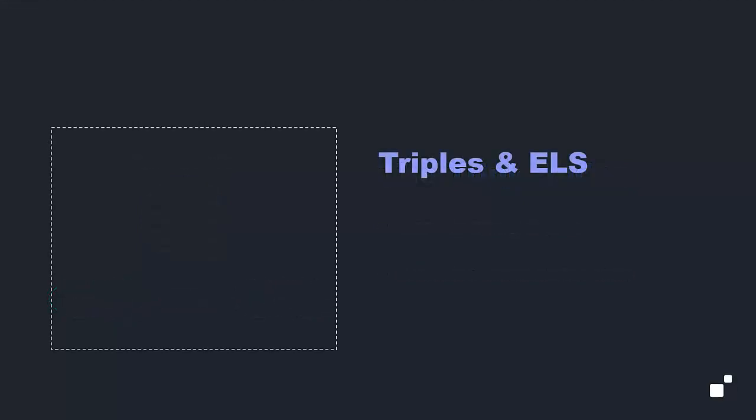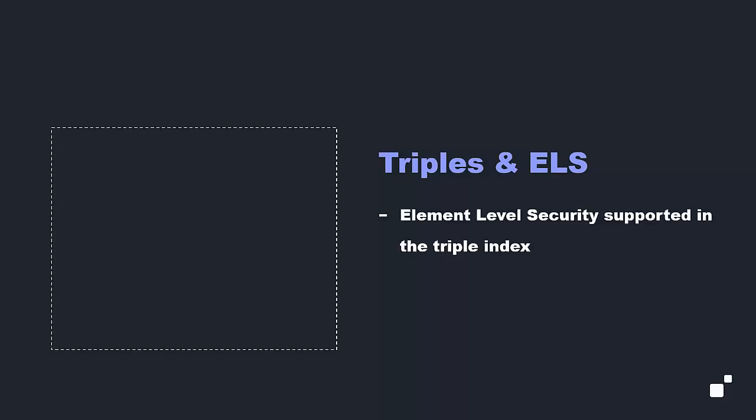Before MarkLogic 10, triples had the same permissions as their containing graph or document. There was no sub-document security on triples. And if a triple occurred inside an ELS-protected path, it was not indexed.